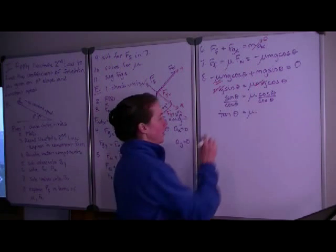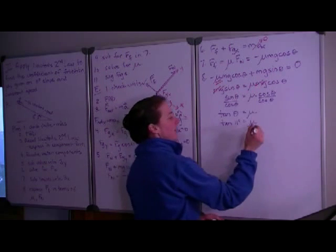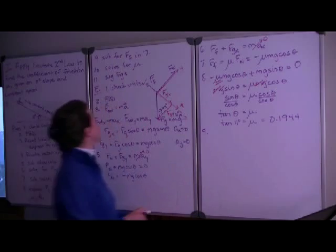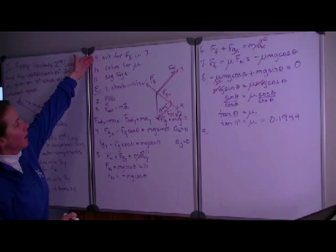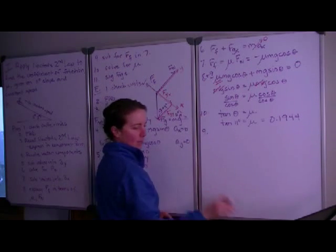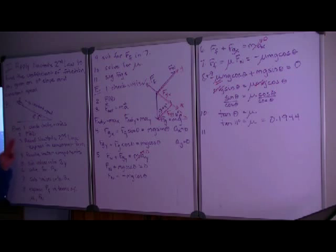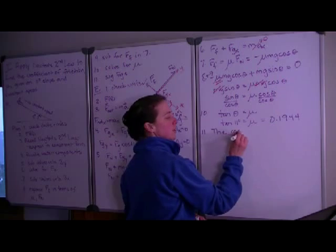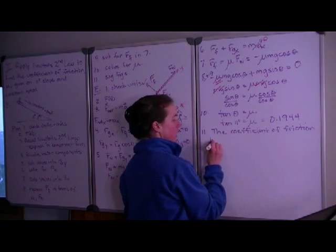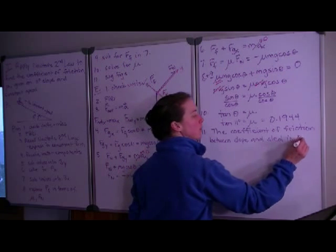We now have one calculation to make: the tangent of 11 degrees. Make sure your calculator is in degree mode. The tangent of 11 degrees equals 0.1944. Reporting to the correct number of significant figures — we were given one value, 11 degrees, to two significant figures — so the coefficient of friction between the slope and the sled is 0.19.